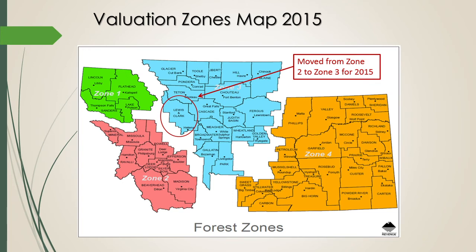This is an example of the zone map for 2015. You can see we have a circle around Lewis and Clark County being the one zone that changed coming into 2015. It previously was in Zone 2, the pink zone to the lower left, and it moved up into Zone 3, which is the central zone.